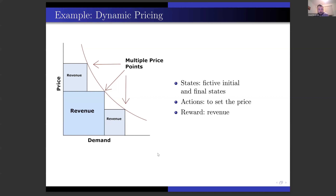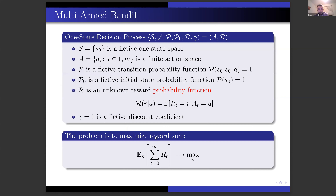Мы можем назначать цену из дискретного набора, смотреть, как сегодня продавался товар, и на следующий день корректировать цену. Было бы хорошо, чтобы это всё было сделано автоматически и сходилось к оптимуму — то есть к самой лучшей цене. Вот задача многорукого бандита как очень вырожденный случай задачи обучения с подкреплением.